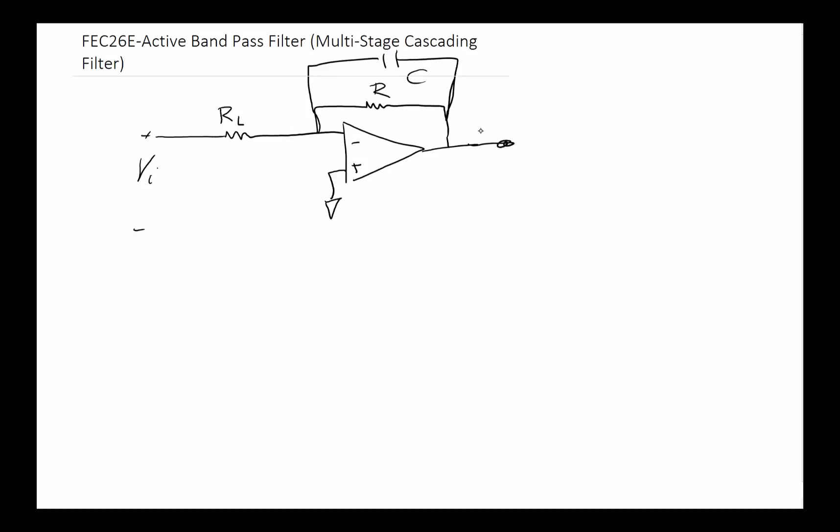Then we also put our capacitor here that makes it a low pass filter. At this point, the input goes in and when it comes out at the output, it has been put through a low pass filter so only below a certain frequency has gone through.